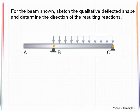And then we notice that we don't have any load on member AB. So with those kinds of conditions found, we can then sketch the deflected shape of the member that has the load on it first.